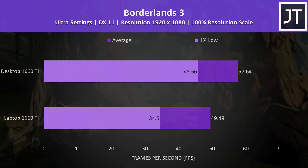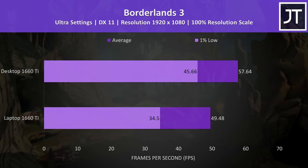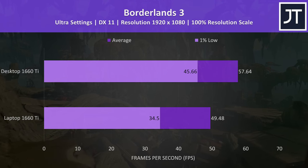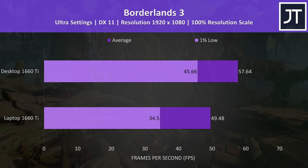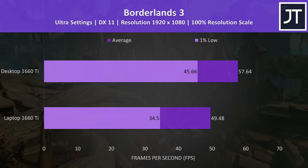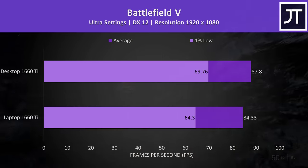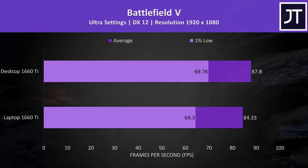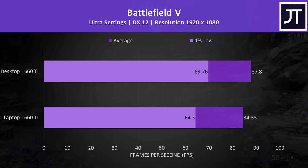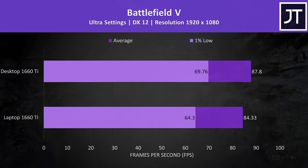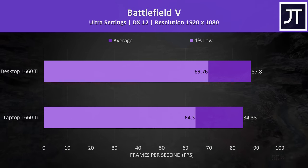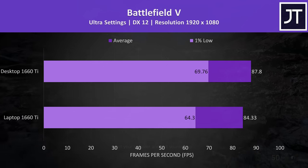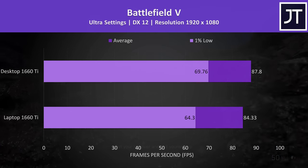Borderlands 3 was tested with the benchmark tool, and the desktop graphics saw a 16.5% higher average frame rate compared with the laptop result. Battlefield 5 was tested in campaign mode using the exact same section of the game. There was a far lower difference between the two in this test, with the desktop graphics coming out just 4% faster.